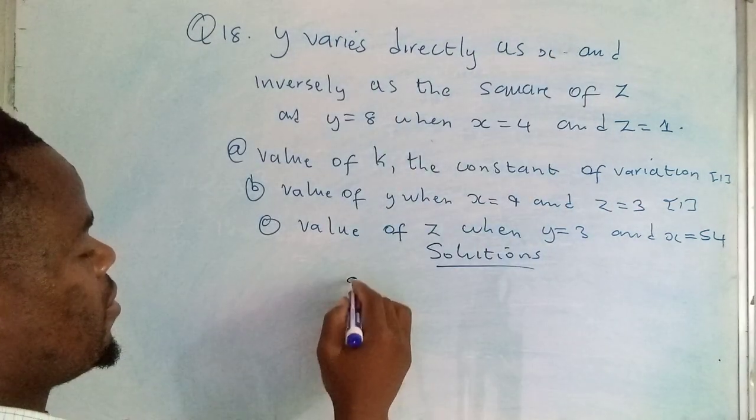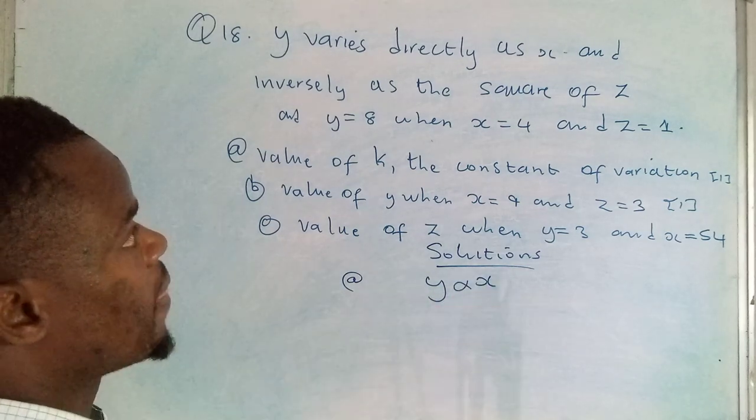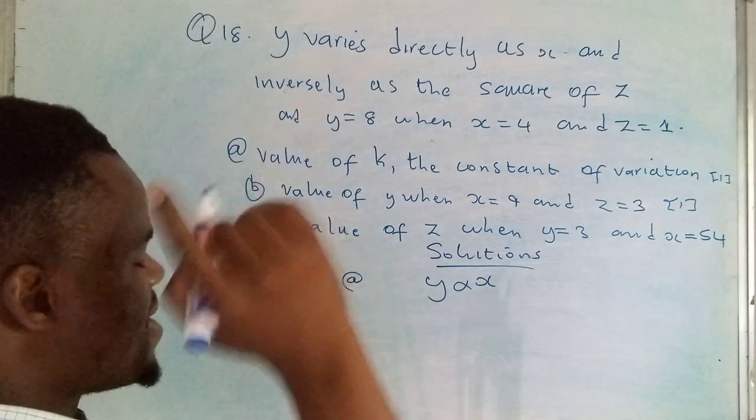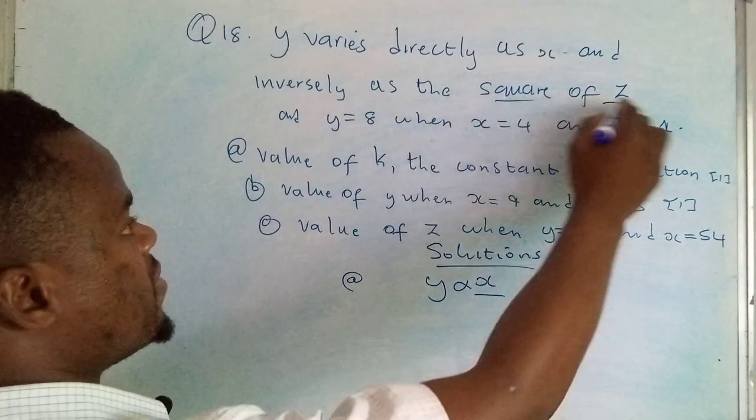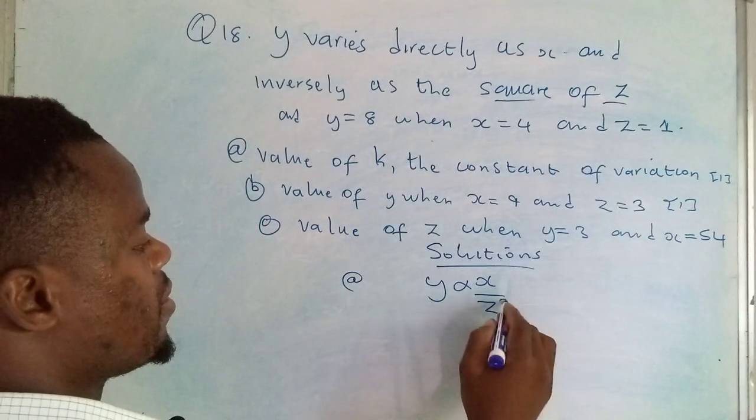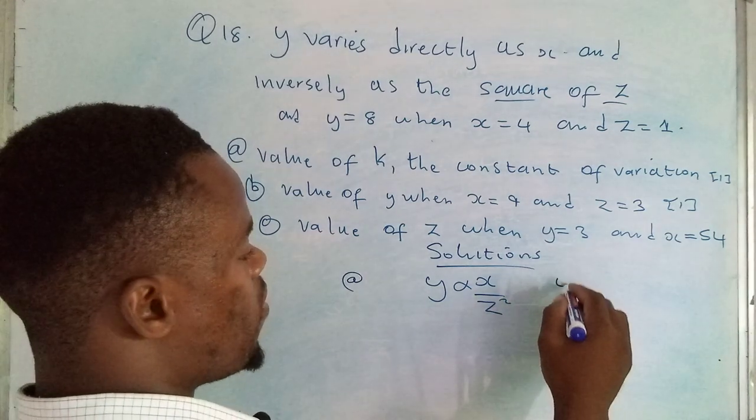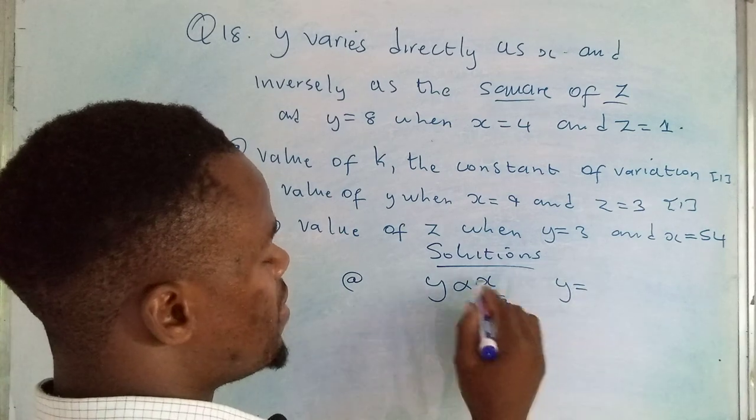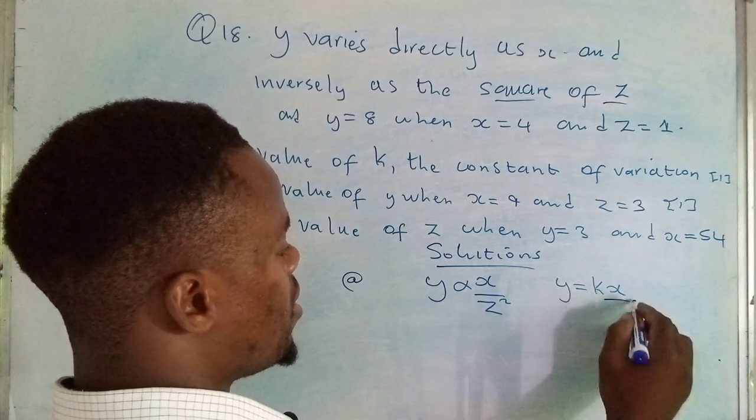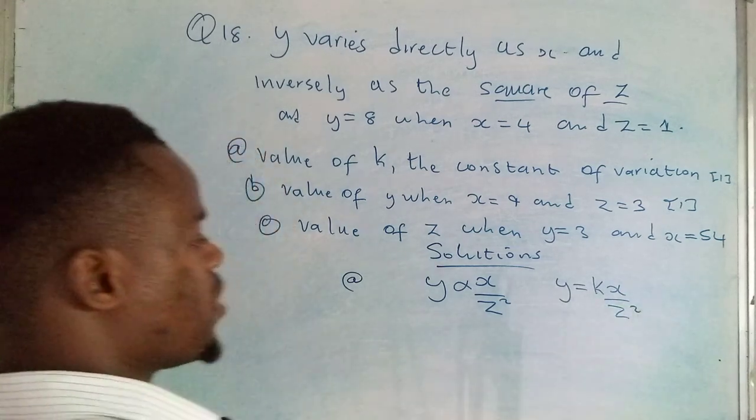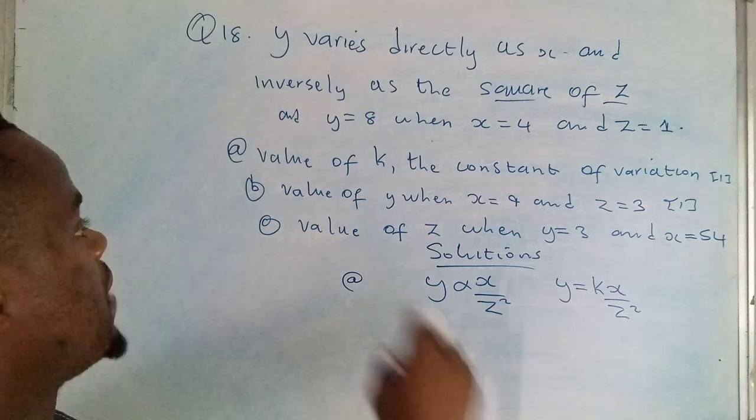They're saying y varies directly as x and inversely as the square of z. We can formulate an equation from this. We say y is equal to, there must be a constant of variation which is k, times x over z squared. That's the equation that we'll be making use of.